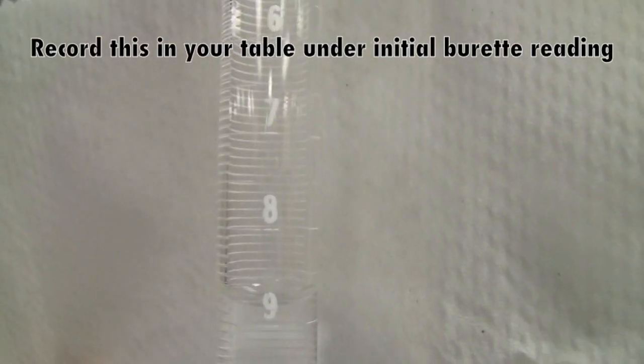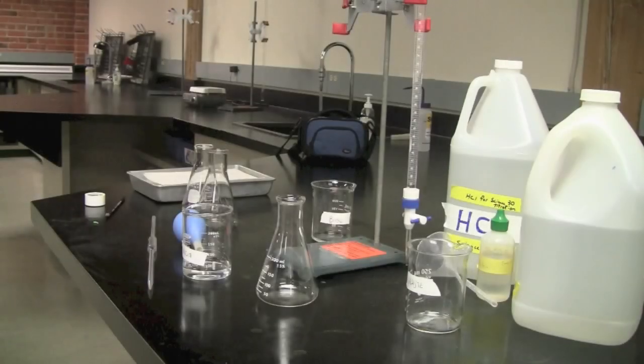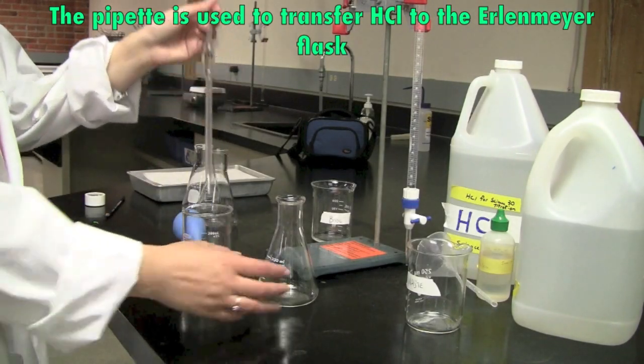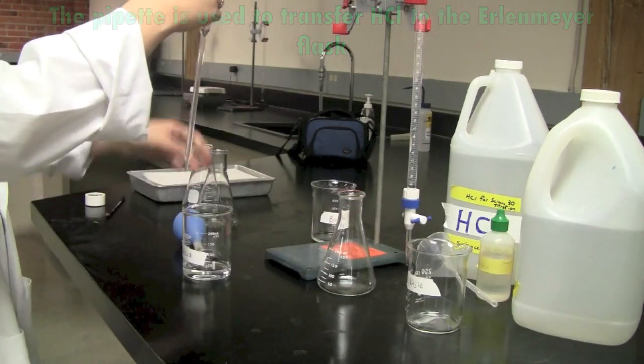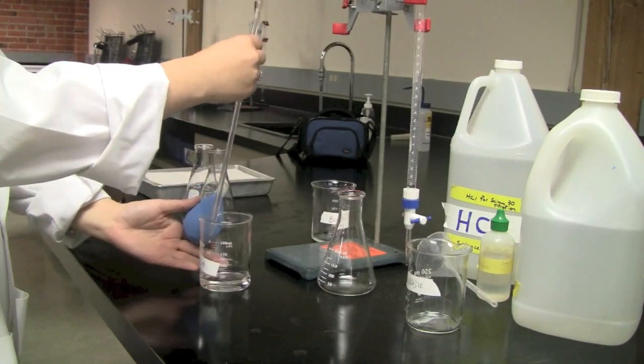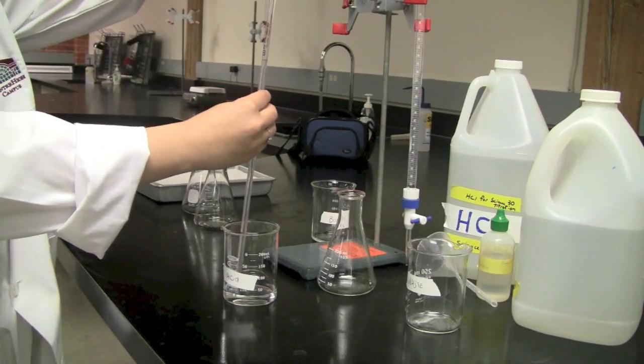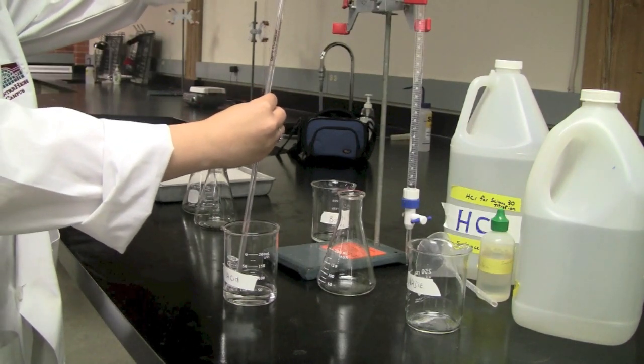It's around 8.9. So what you're going to do is you're going to use the 10 milliliter pipette and you're going to use a pipette bulb to assist you. You're going to transfer a small amount of hydrochloric acid to the Erlenmeyer flask.